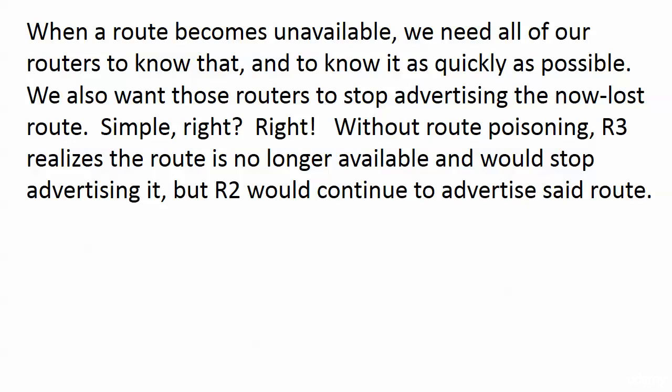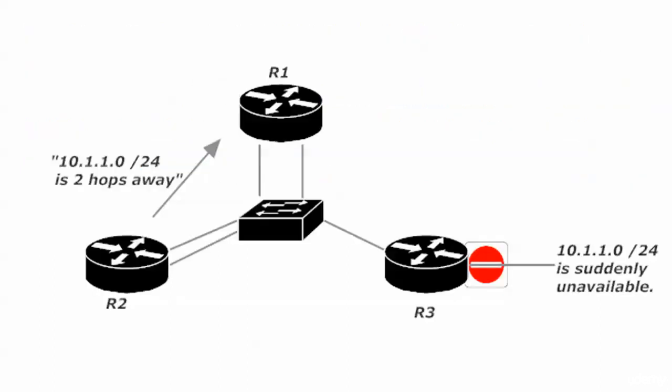What I'm showing you next is without route poisoning. Router 3 says 10.1.1.0/24 is unavailable and stops advertising it. The problem is that doesn't do anything about the entry in router 2's routing table. Router 2 is just going to keep telling everybody, including router 1, that it knows where 10.1.1.0/24 is and it's two hops away — even though the network itself is now unavailable.